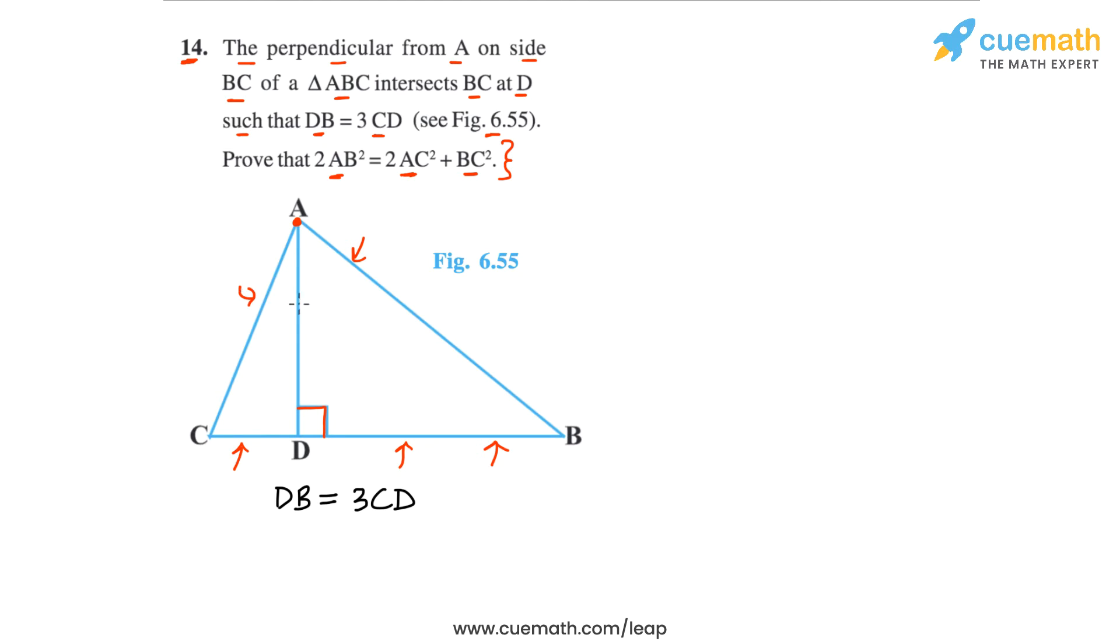Let me highlight both triangles for you. Triangle ABD is this triangle. We can apply the Pythagorean theorem to this triangle. Similarly, triangle ACD is this triangle on the left side, and we can apply the Pythagorean theorem to this triangle also because both triangles are right-angled triangles.